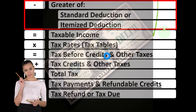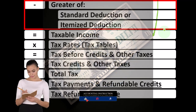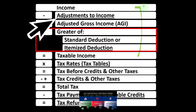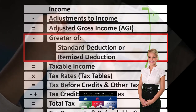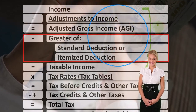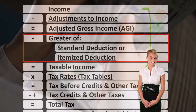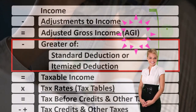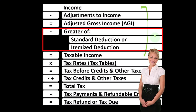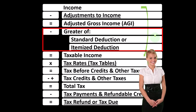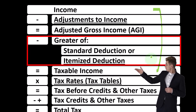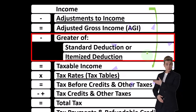We want taxable income as low as possible, as opposed to normally when we want net income as high as possible. Going through the equation, we've got the income line, the above-the-line deductions — the adjustments to income to get to that AGI subtotal — because AGI is used to calculate phase-outs for deductions and credits. Then we have the below-the-line deductions, which is the greater of the standard or itemized deductions. We only take itemized deductions if they're greater than the standard deduction.